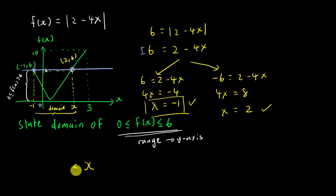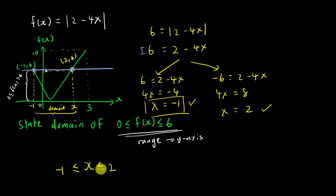The domain is always written in terms of x. So the domain is from x = −1 to x = 2. You must be careful with the inequality signs — since both endpoints use 'equal to', we write −1 ≤ x ≤ 2. If the range did not include the equal sign, then the domain endpoints also would not include equality.